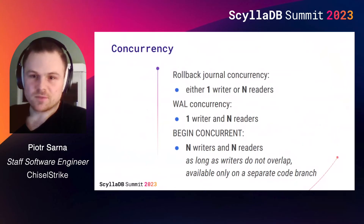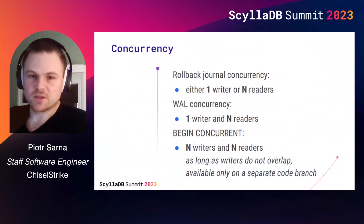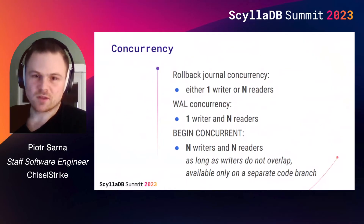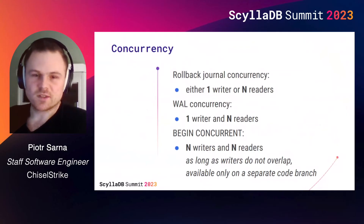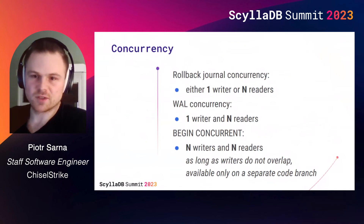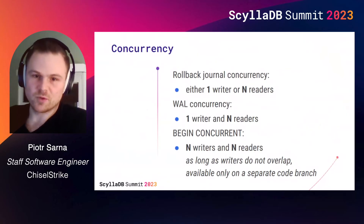An even more interesting feature that isn't merged upstream yet is a new flavor of transaction called BEGIN CONCURRENT. That only works in WAL journaling mode, and it lets multiple writers continue in parallel using optimistic locking. It basically means that once a concurrent write transaction wants to commit, it needs to check if the pages it touched were not modified by any other concurrent transaction. If they weren't, it's safe to commit. If they were, the transaction needs to roll back.